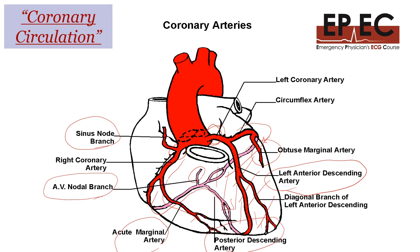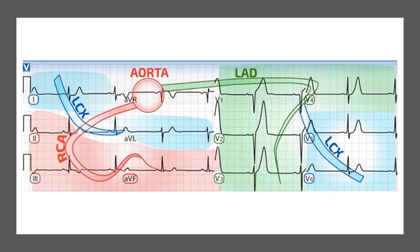This is a nice diagram that correlates blood supply to which wall of the heart is affected on the ECG. Leads II, III, and aVF correspond to the inferior wall, supplied by the right coronary artery. Leads I, aVL, V5, and V6 correspond to the lateral wall, supplied by the left circumflex artery. Leads V1 to V4 correspond to the anterior wall, supplied by the LAD.